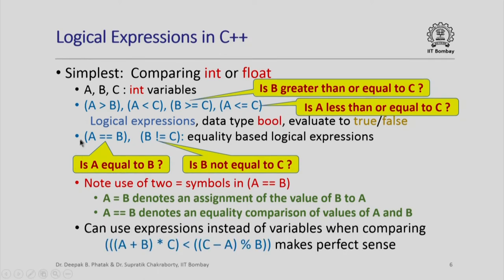When using comparison operators, we can use variables as their arguments, but we could also use arithmetic expressions. For example, we could check if a + b * c is less than c - a % b. The meanings of these arithmetic symbols were covered in our previous lecture on arithmetic expressions.